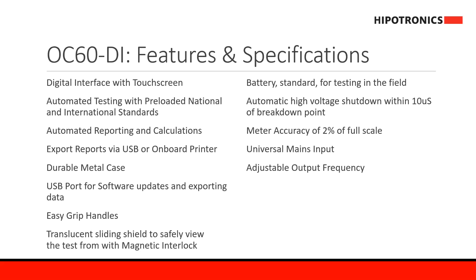If you slide open the shield, the high voltage of the OC60 DI will automatically stop. The system now comes with a battery included, which allows for on-site testing. There is also an automatic high voltage shutdown within 10 microseconds of the breakdown point. The system's accuracy is 2% of full scale, and it has universal mains inputs which allow for adjustable output frequency.